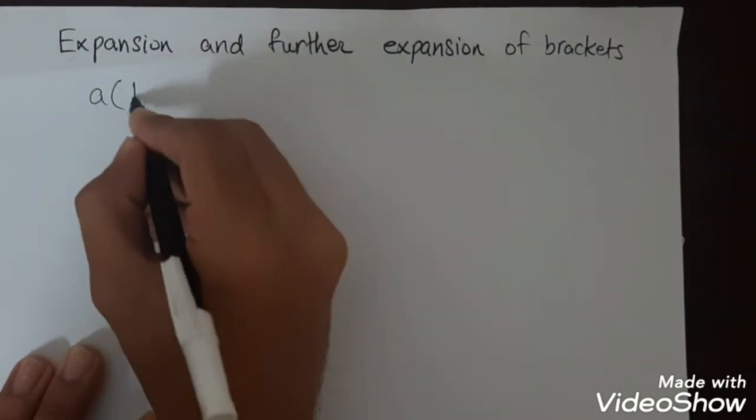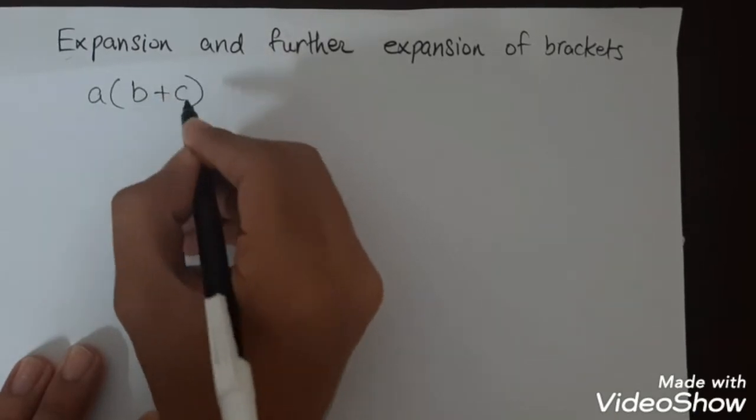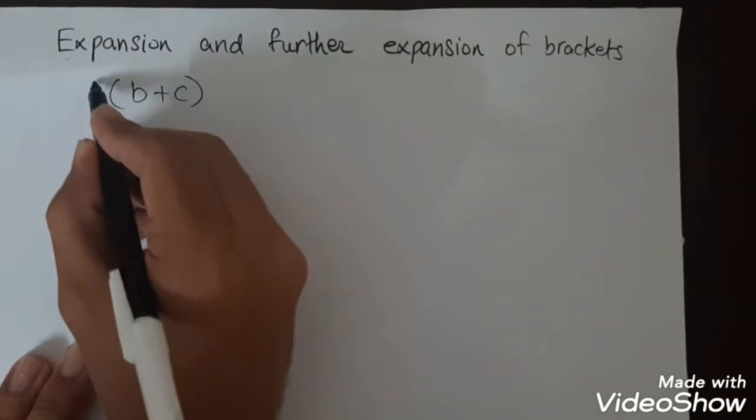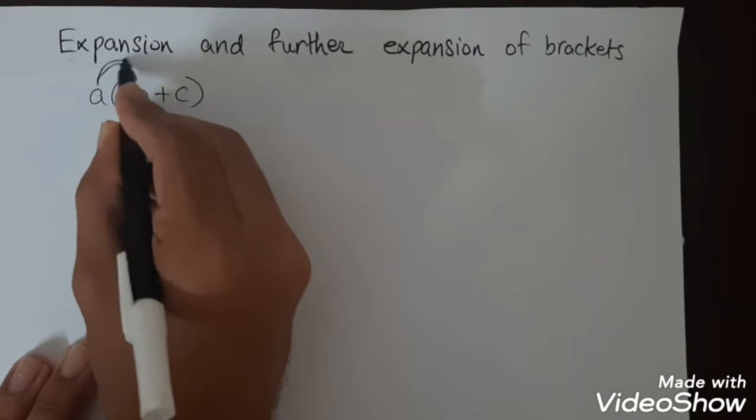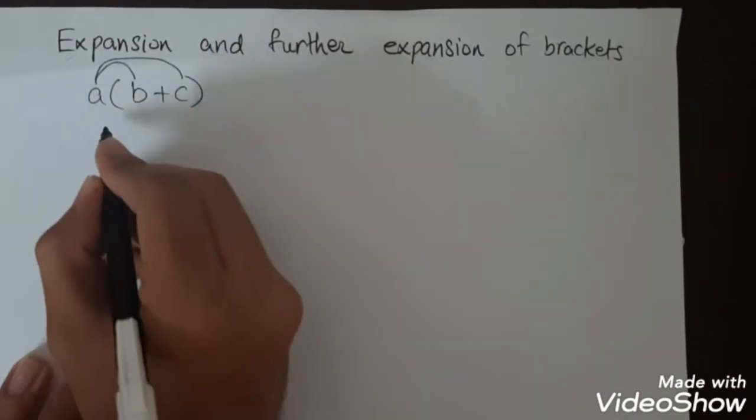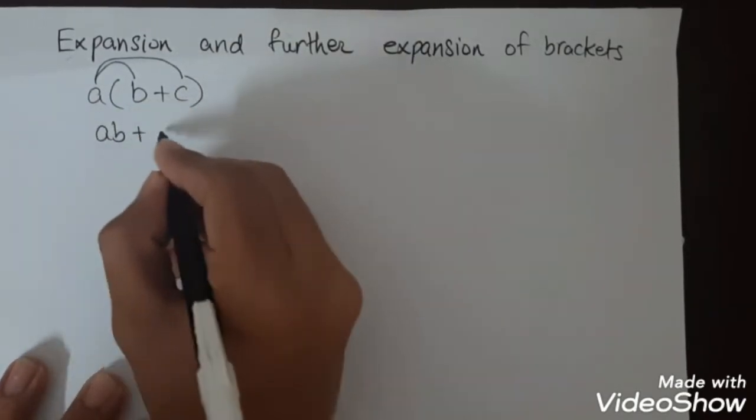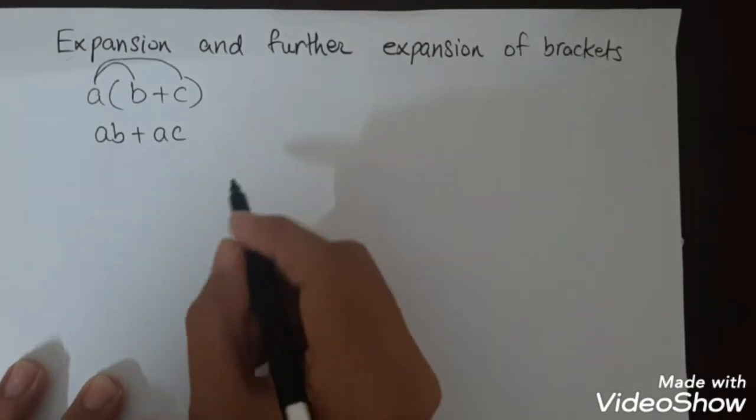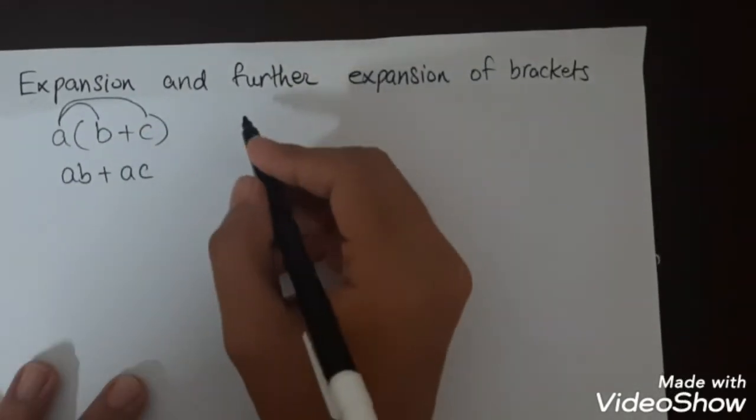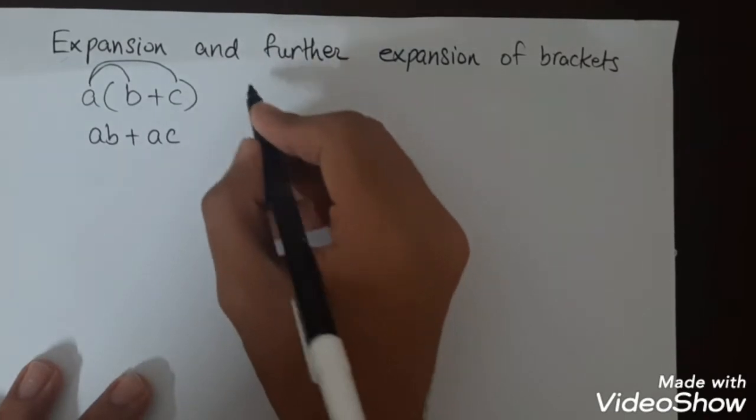For example, if we have a(b+c) and we have to expand this, we will multiply a by b and a by c. So this will be ab plus ac. This is expansion.